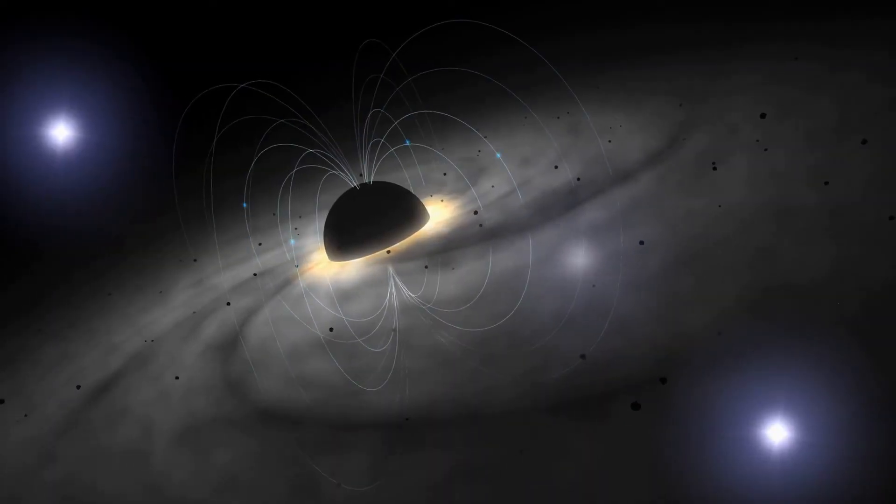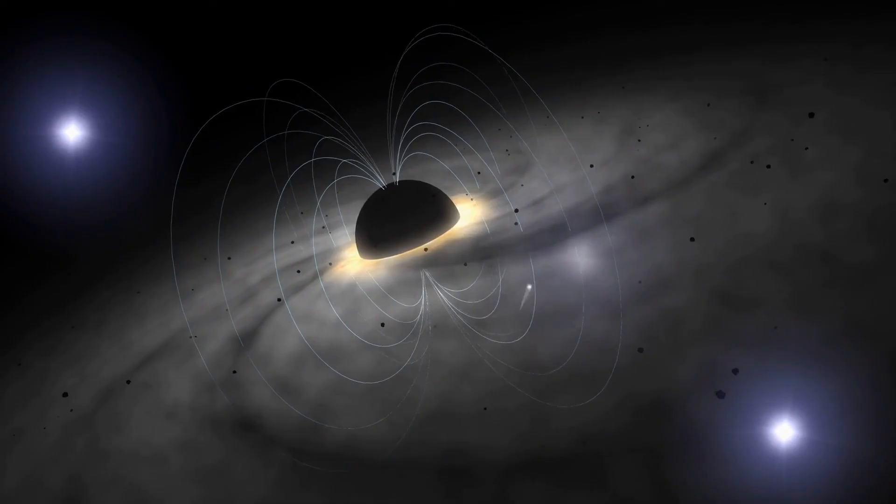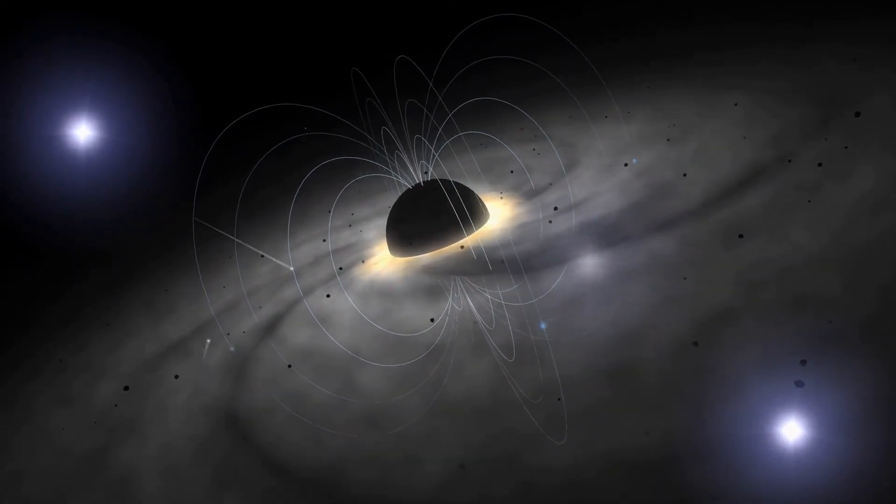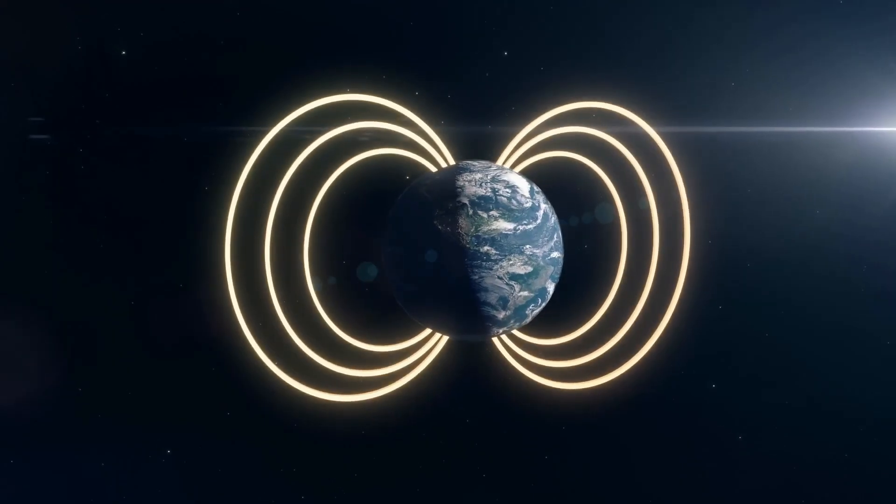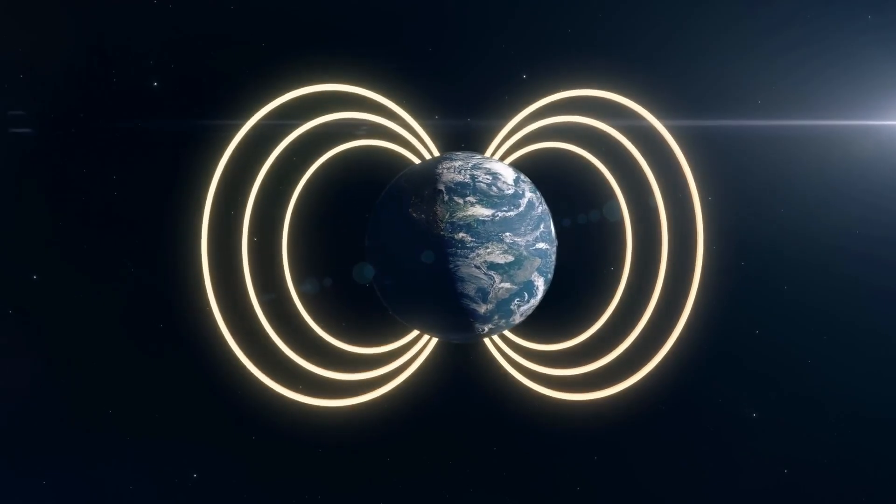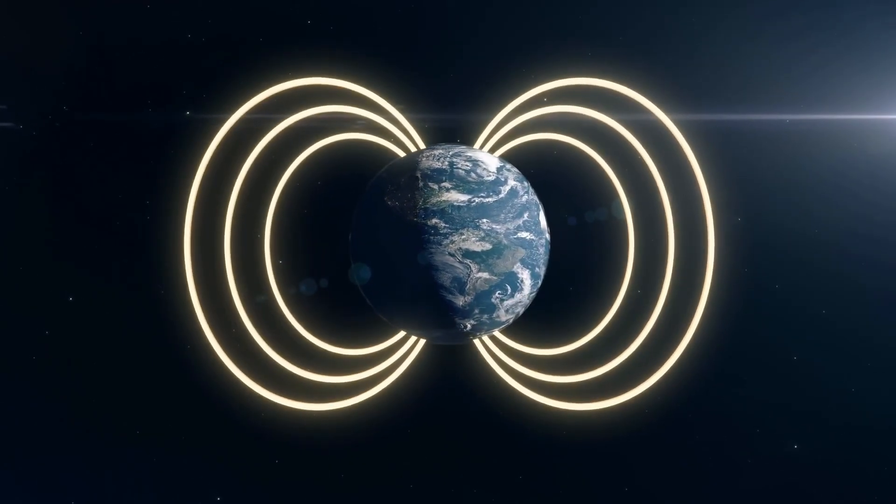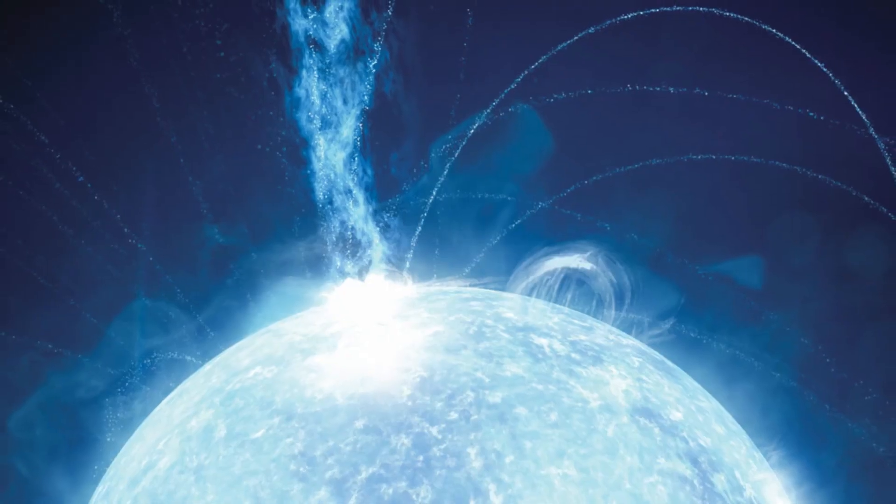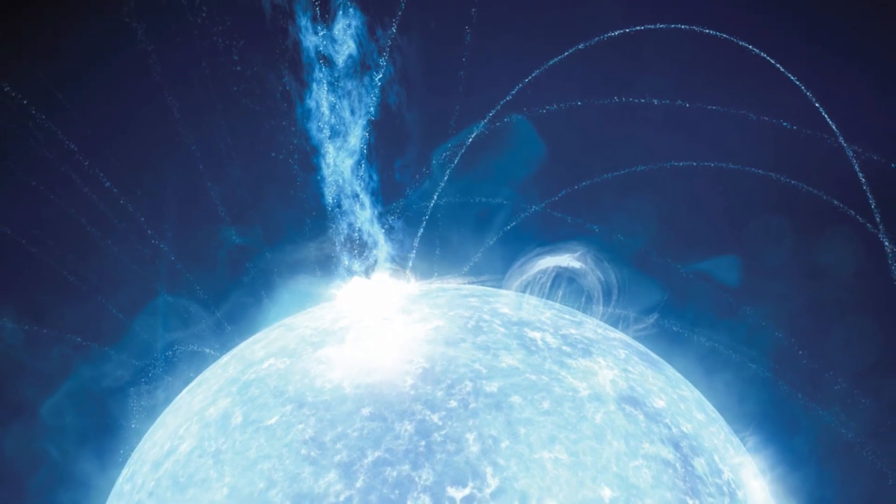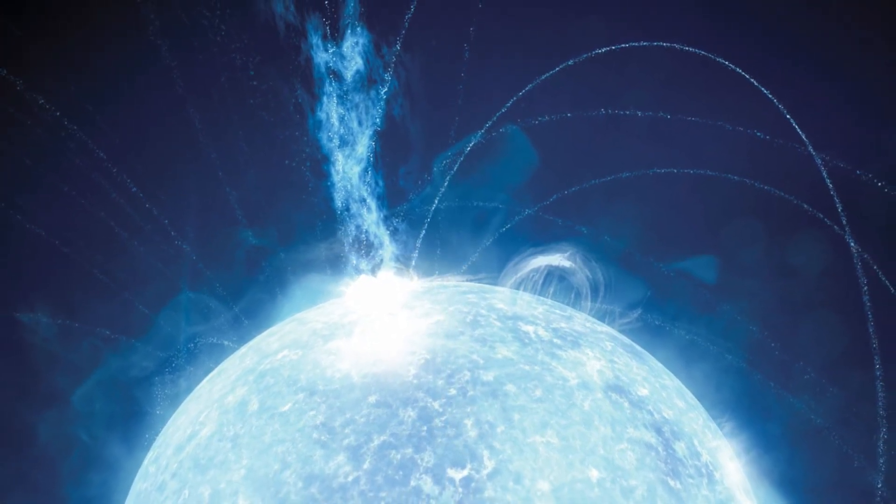Notably, the magnetic fields associated with neutron stars are unparalleled in strength, measuring a quadrillion times more potent than Earth's magnetic field post-birth. Initially termed magnetars, they gradually stabilize over time.